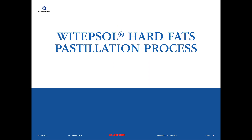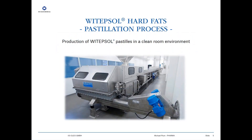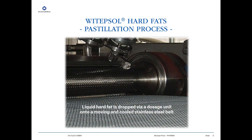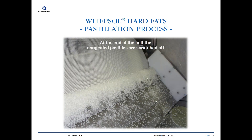Our hard fats are delivered in a pastille shape. The pastillation process takes place in a specific covered clean room class D environment. It is a completely covered machine, and inside there is an 11-meter-length cooled stainless steel plate. Molten hard fat is dropped by a specific dosage unit onto this cooled steel plate, forming little drops. Over the 11-meter distance, cooled from below and from the top with chilled air, all the pastille drops are congealed and solidified. At the end, a large knife scratches the pastilles off the belt.